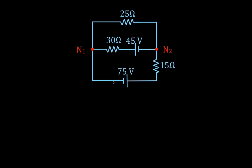We have three branches. We're going to start at the top and say that is current number one, flowing in the clockwise direction. The second current is in the second branch, flowing from N2 to N1. The third current flows clockwise through the third branch — we'll call that I3. So we have three currents: I1, I2, and I3.